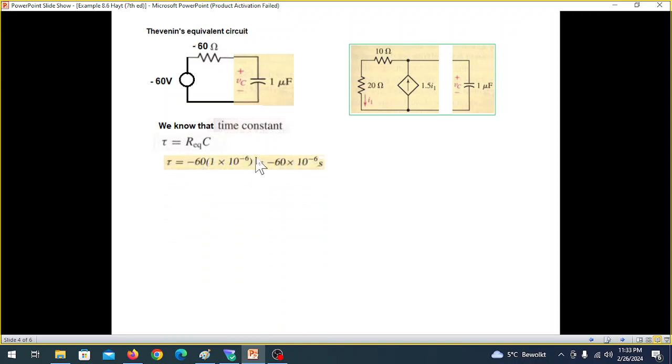That means τ is R equivalent. We have found minus 60 and C is 1 microfarad. So it will be minus 60 into 10 raised to the power minus 6 second.